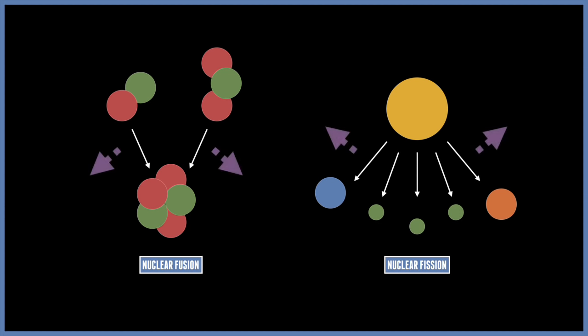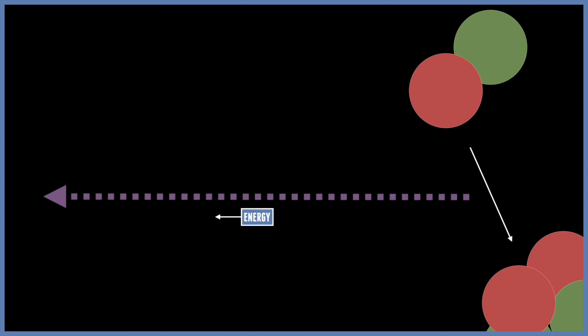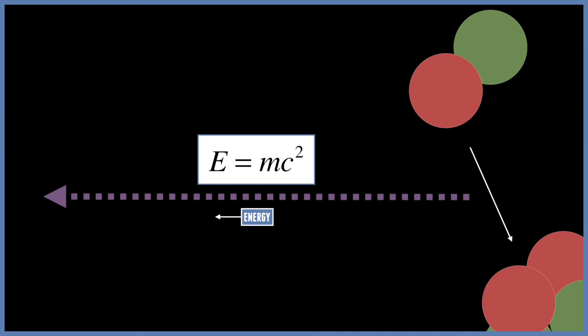These nuclear reactions can release a large amount of energy. The total mass of the atoms weigh slightly less than what they did before the atoms went into the reaction. This extra mass is converted into energy, and this is what we see in the equation of E equals mc squared, where E is the energy and m is the mass, and C is the speed of light.